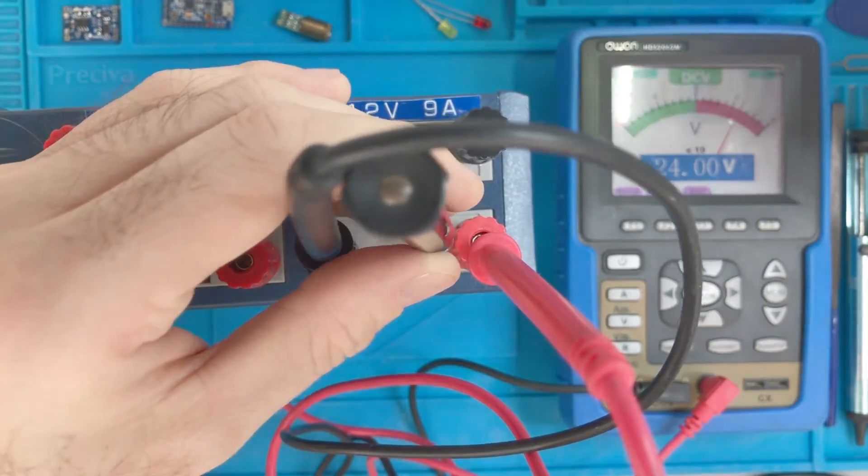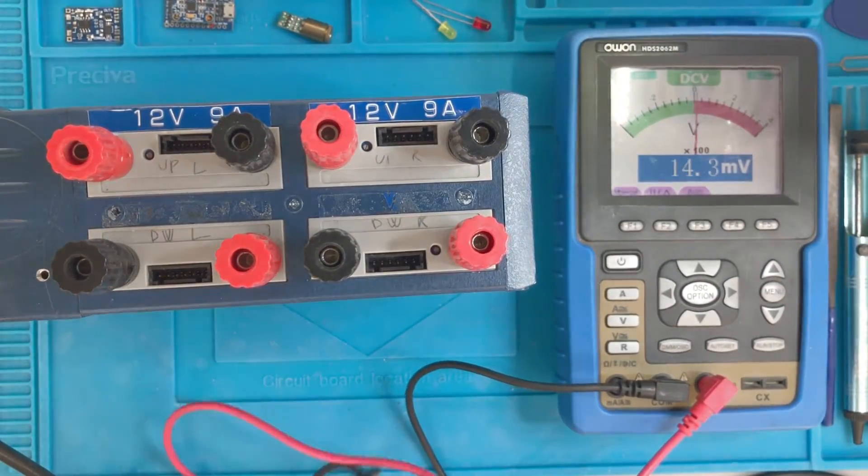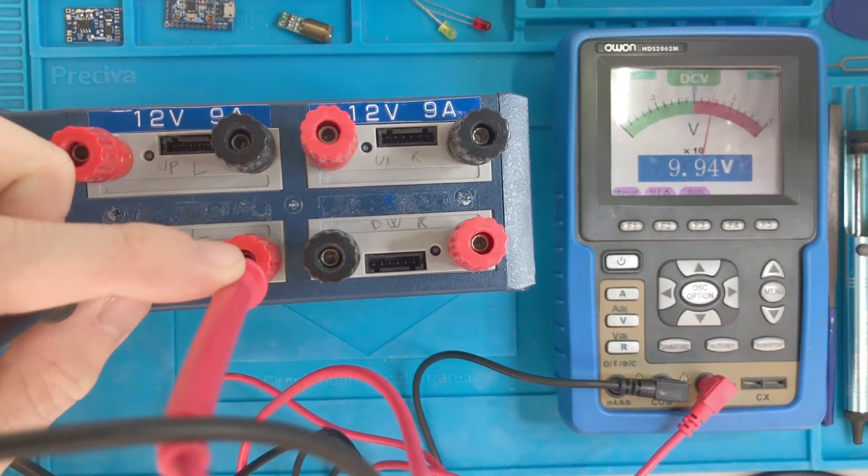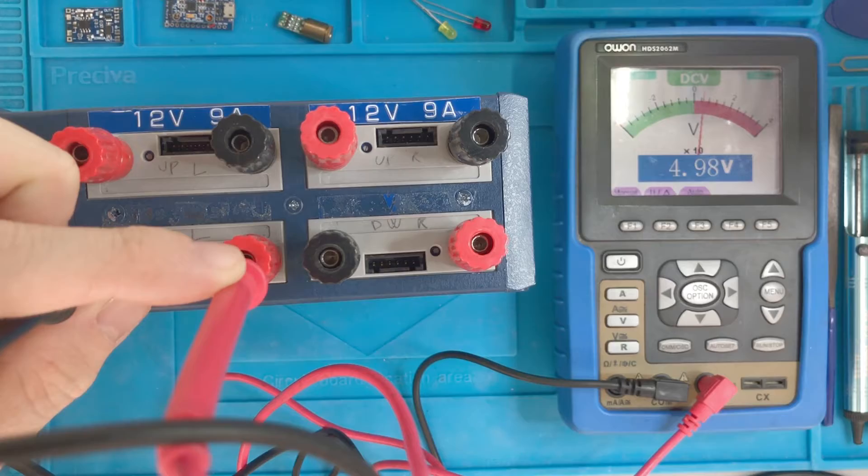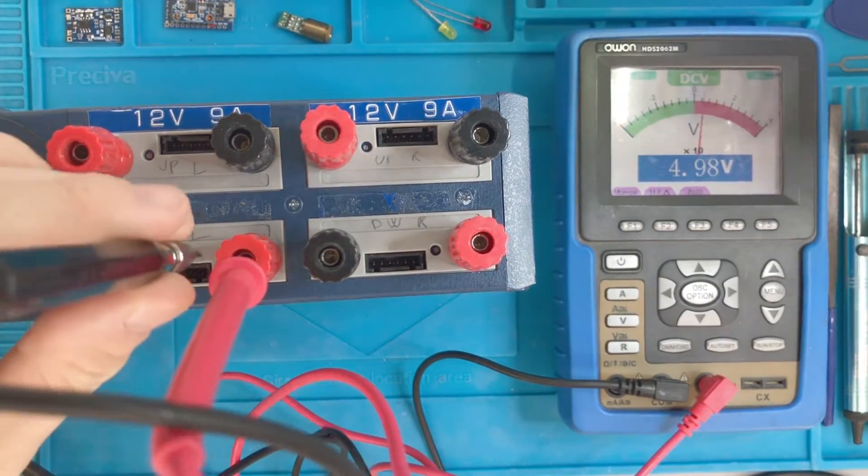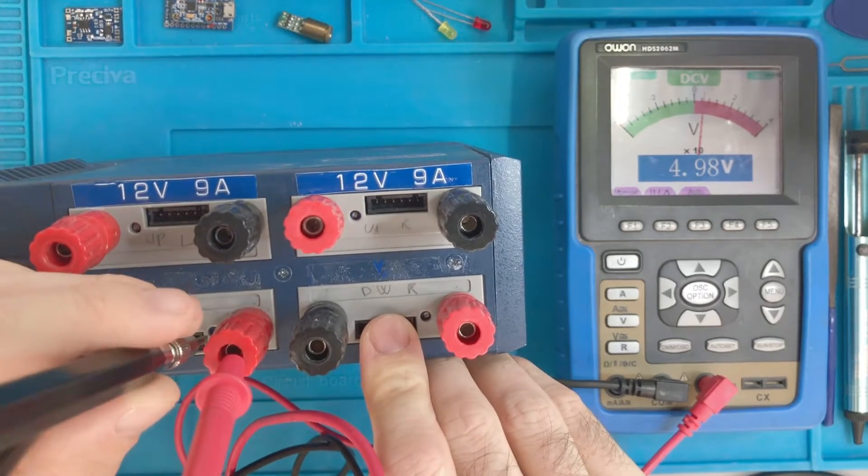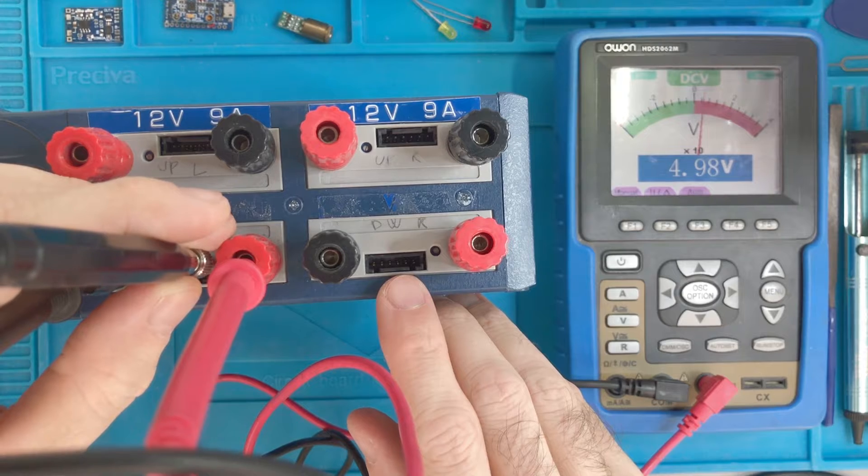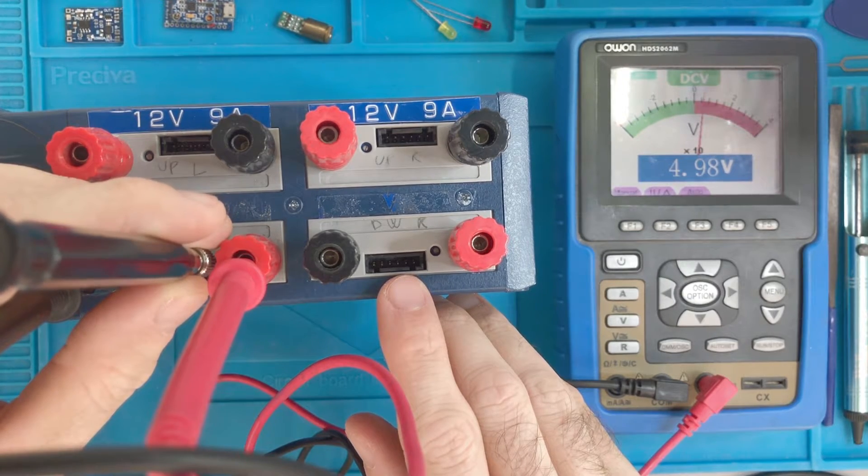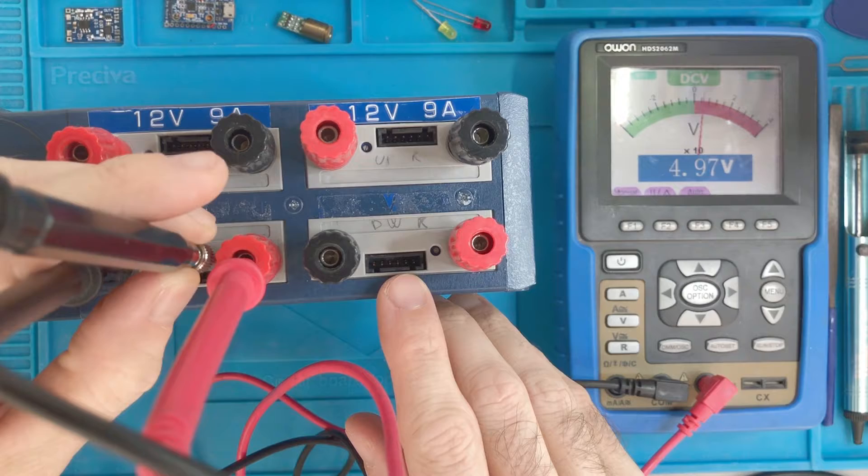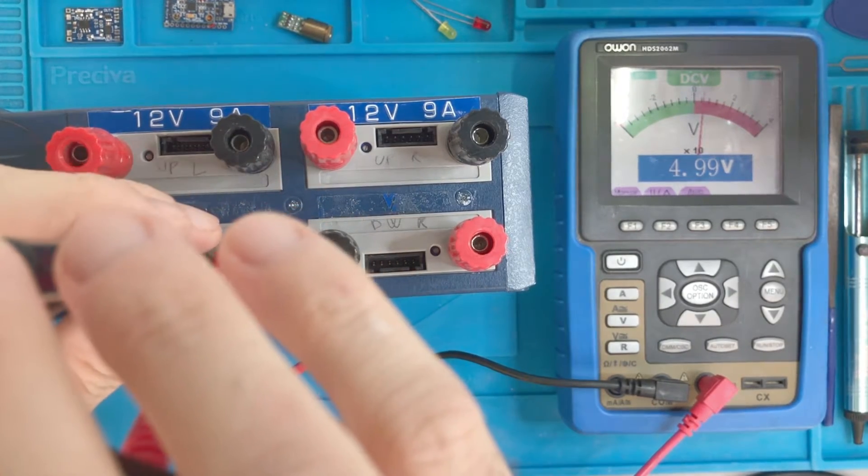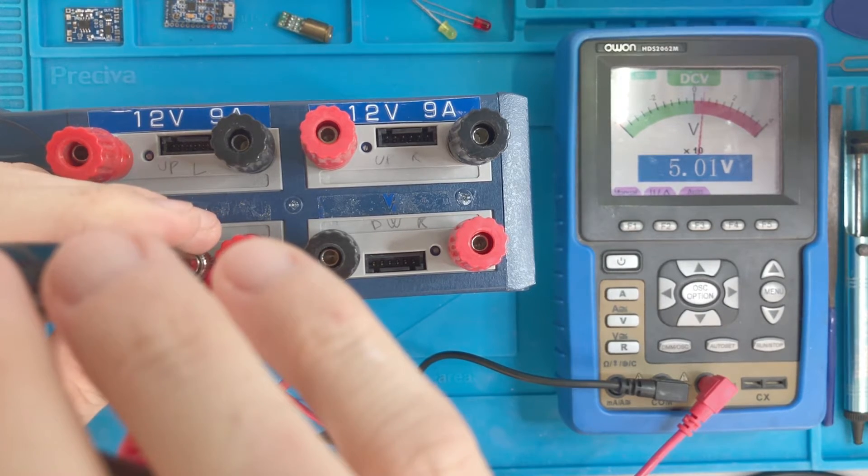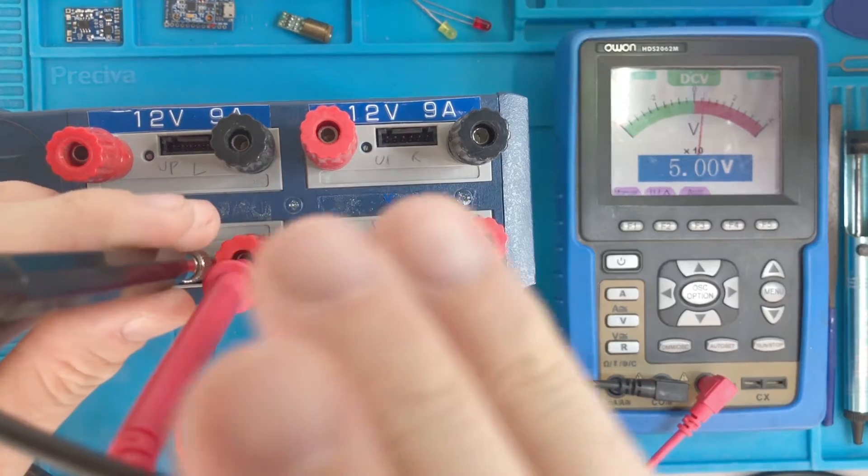Let's check. Okay, then this one should be five. It's basically five. So let's turn it a little bit. Now the other way around. Five volts, 5.00 volts.